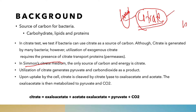But how can we know whether the bacteria has utilized the citrate or not? What actually happens is that whenever bacteria utilize citrate, the end products will be pyruvate and carbon dioxide. I repeat — whenever bacteria utilize citrate, the end products will be pyruvate and carbon dioxide, as we know from the Krebs cycle.